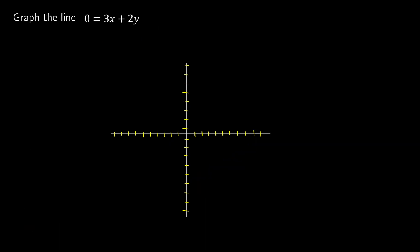Graph the line 0 equals 3x plus 2y. When we have something like this, we want to convert it into the form y equals mx plus b. So we isolate y: 2y equals negative 3x, then divide by 2, giving y equals negative three halves x. There's no b here, so you can think of it as plus 0 — the line crosses at the origin, 0, 0.